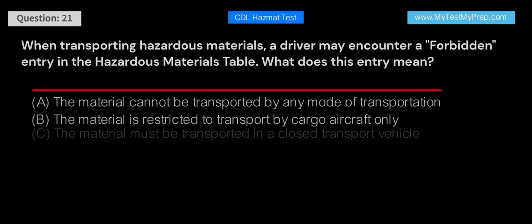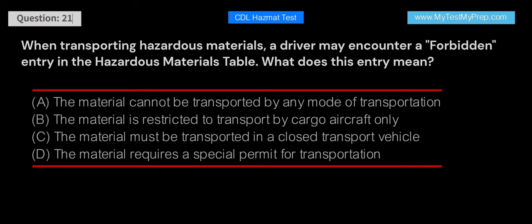When transporting hazardous materials, a driver may encounter a forbidden entry in the hazardous materials table. What does this entry mean? A. The material cannot be transported by any mode of transportation. B. The material is restricted to transport by cargo aircraft only. C. The material must be transported in a closed transport vehicle. D. The material requires a special permit for transportation. Answer: A. A forbidden entry means that the material cannot be transported by any mode of transportation. This designation is given to extremely dangerous materials that pose an unacceptable risk to public safety during transportation.